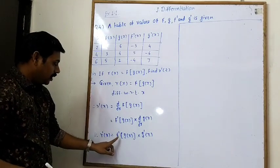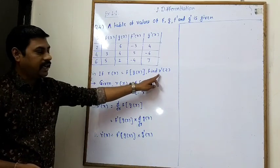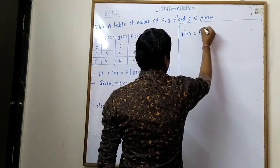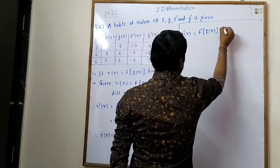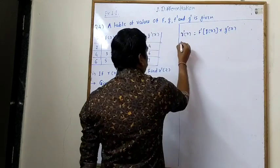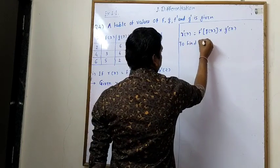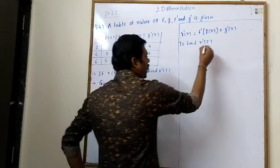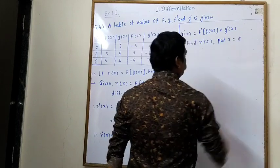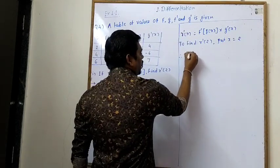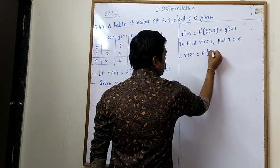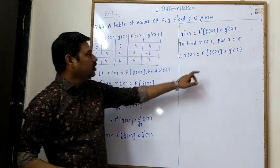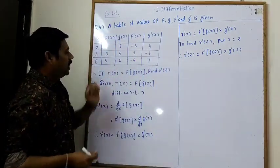So r'(x) = f'(g(x)) · g'(x). To find r'(2), put x = 2. Therefore r'(2) = f'(g(2)) · g'(2). Now use the values of g(2) and g'(2) from the given table.